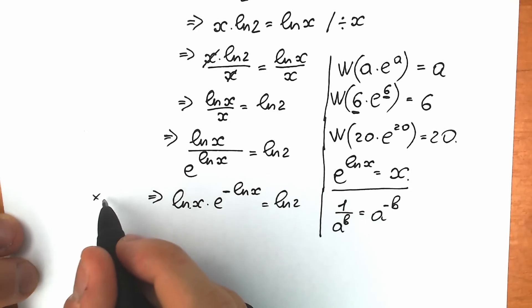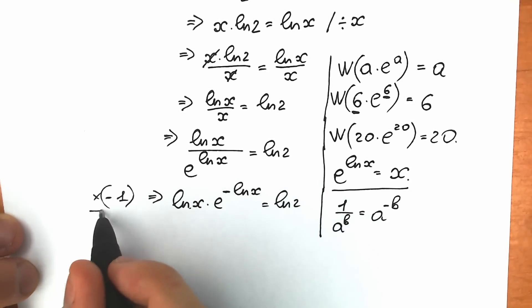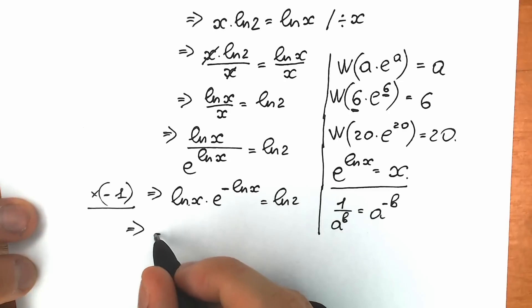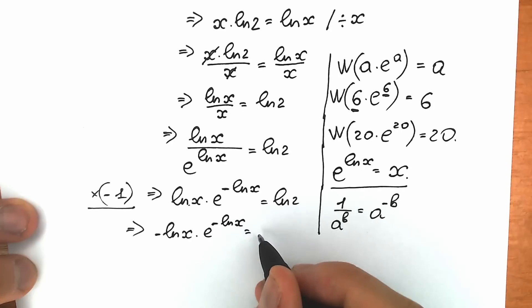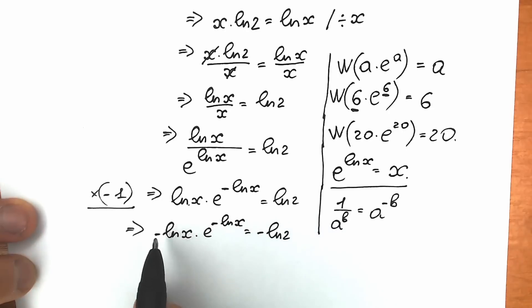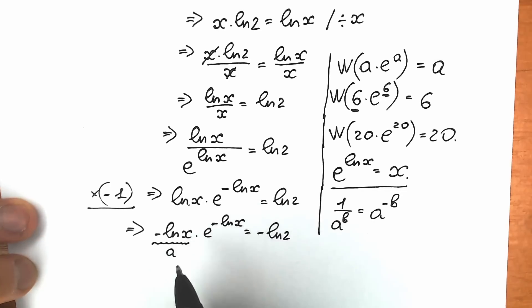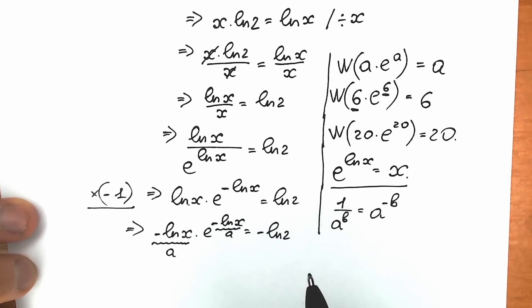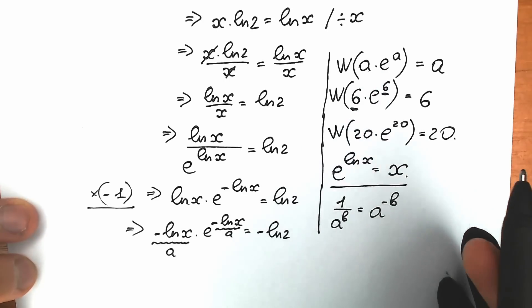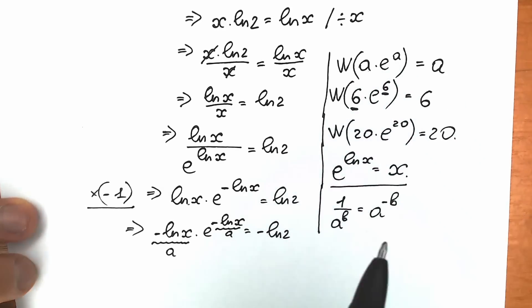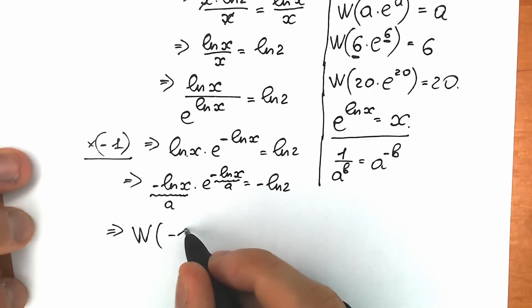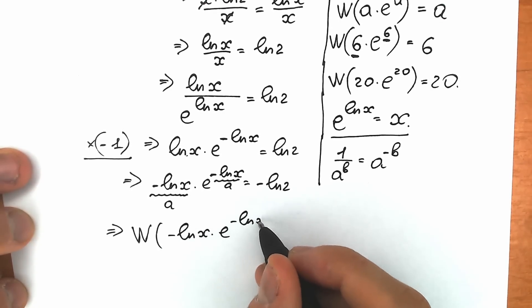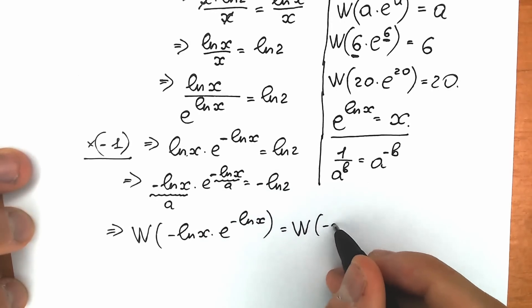So right now we need to create a minus on both sides. Let's multiply both sides by negative 1. We will have negative natural log x times e to the power negative natural log x, equal to negative natural log 2. Now if we look closely, negative natural log x is our a, we have e, and we have negative natural log x again — the same a. So a times e to the power a. We can easily apply the Lambert W function. Lambert W of (negative natural log x · e^(negative natural log x)) equals Lambert W of (negative natural log 2).